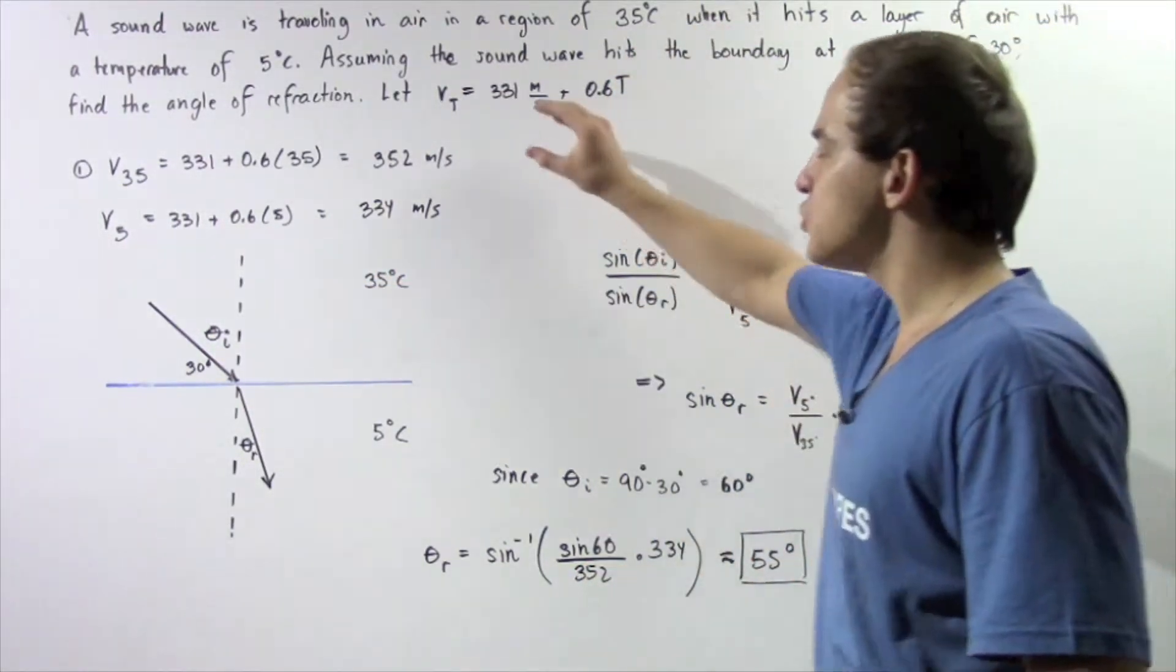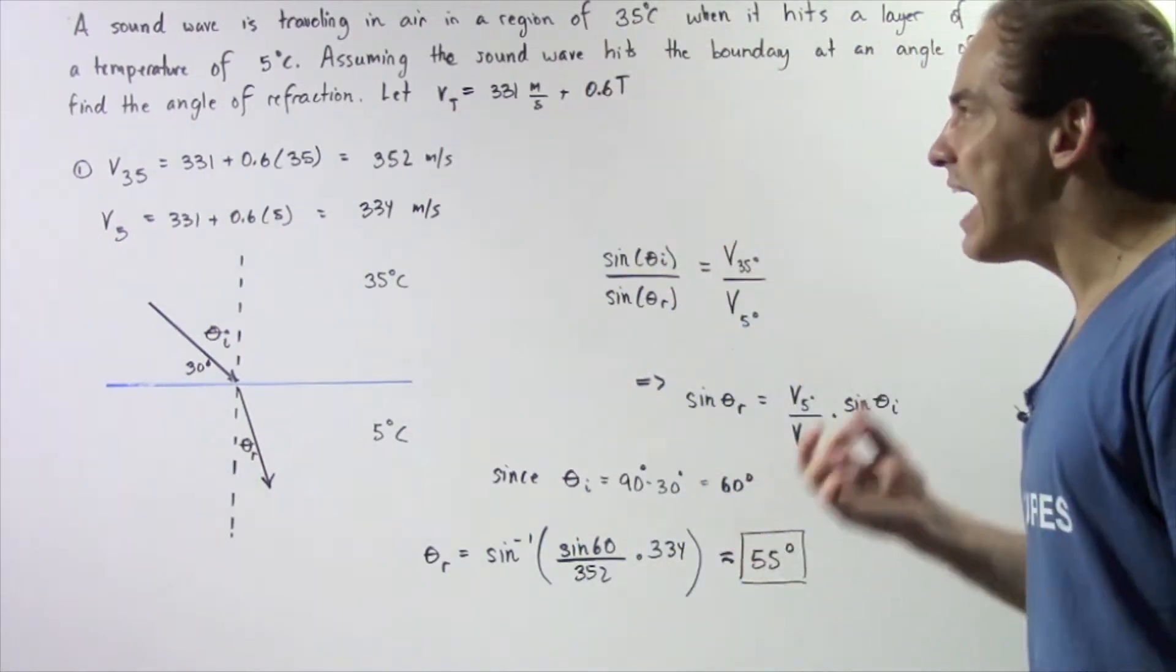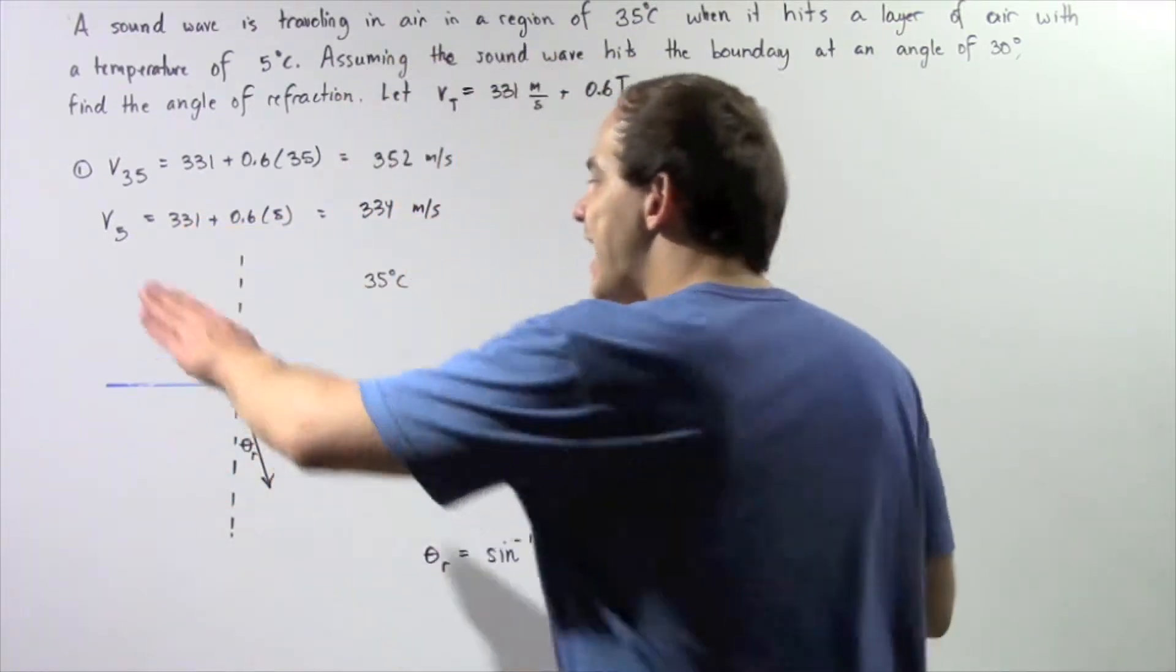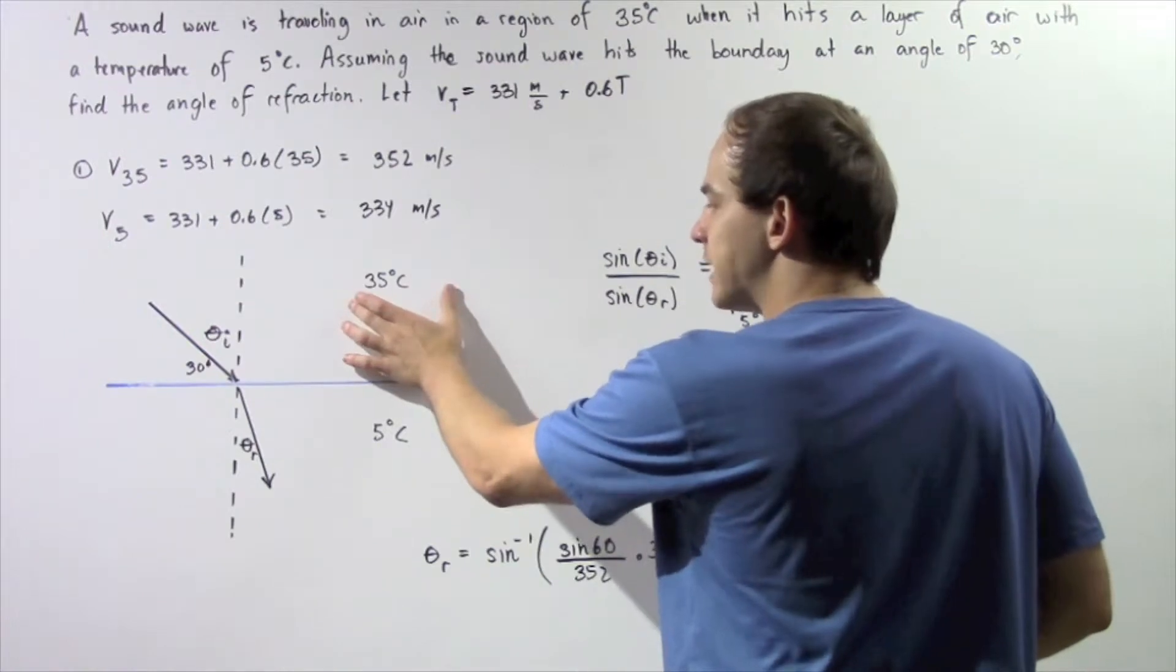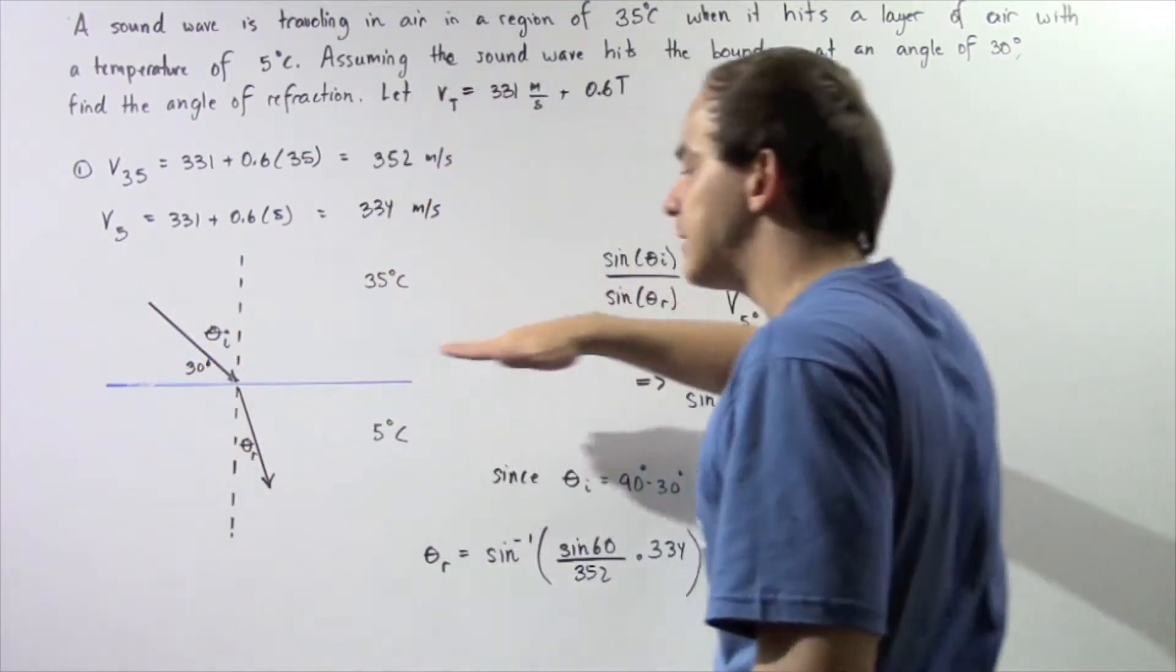So now we know our two velocities, so let's draw our diagram. Our sound wave, which is represented by the following ray, hits our boundary between the 35 degree region and the 5 degree region at an angle of 30 degrees with respect to that boundary.